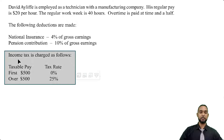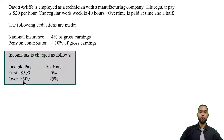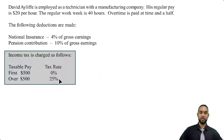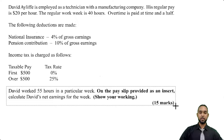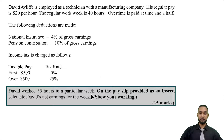Income tax is charged as follows — on the first $500 of taxable pay, the tax rate is 0%, so on the first $500 of your income you have no tax to pay. Then over $500, you have 25% — so on the remainder above the $500 of taxable pay, you pay 25%. David worked 55 hours in a particular week. On the pay slip provided as an insert, calculate David's net earnings for the week.